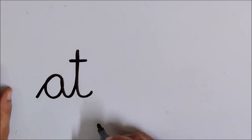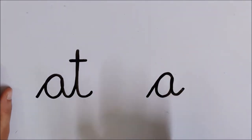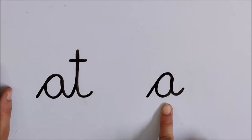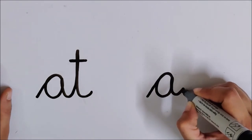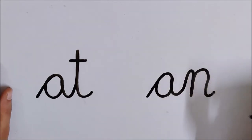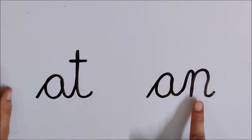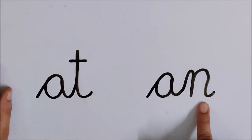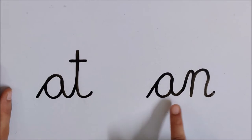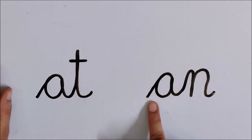Very good. Now tell me children, what am I writing? What is the sound of this letter? Correct. This is A. Now I am going to join one more sound with it. Now children, read this word. A-t-a — at. And what is the sound of this letter? Say again. A-t-a — at. So today we are going to do reading of 'an' words.